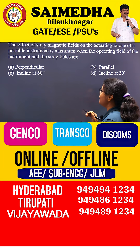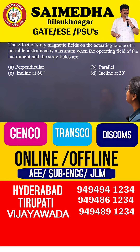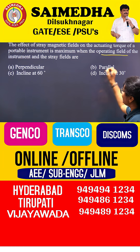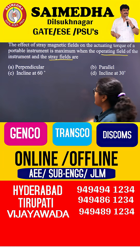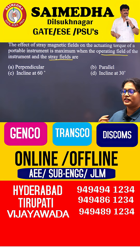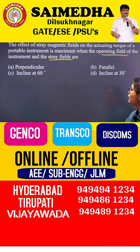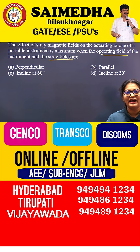So in this question they are asking: what is the relationship between the operating field and the stray fields? How are they connected — whether they are parallel, perpendicular, or inclined at some angle?